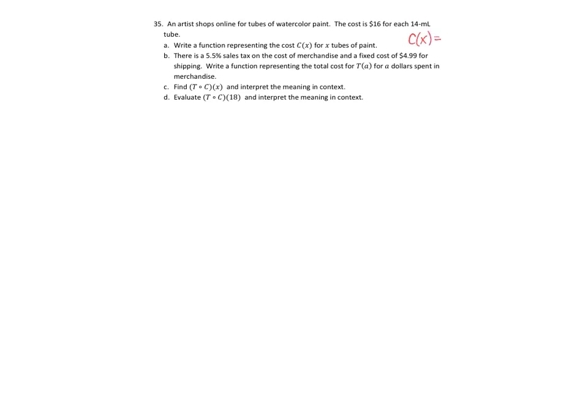And that's it. Then it says there's a 5.5% sales tax on the cost of merchandise and a fixed cost of $4.99 for shipping. Write a function representing the total cost T(a) for a dollars spent on merchandise.